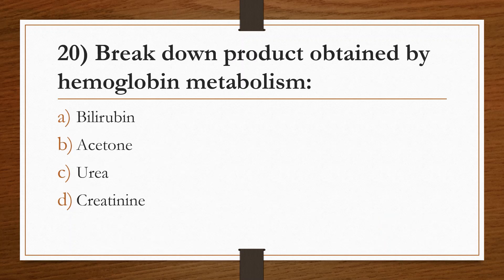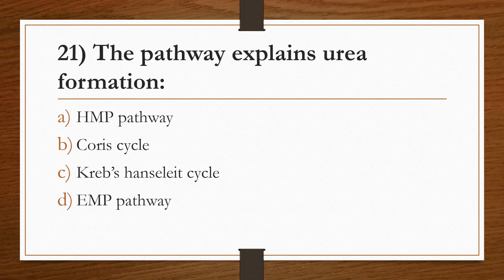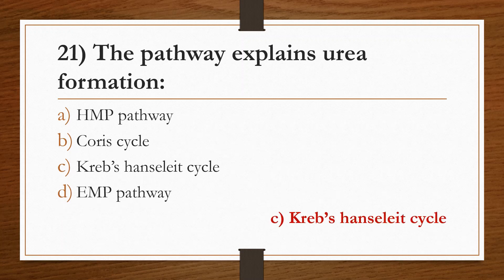Twentieth question: breakdown product obtained by hemoglobin metabolism. Option A: bilirubin. Option B: acetone. Option C: urea. Option D: creatinine. Answer is Option A, bilirubin. Next question: the pathway that explains urea formation. Option A: HMP pathway. Option B: Cori cycle. Option C: Krebs-Henseleit cycle. Option D: EMP pathway. Answer is Option C, Krebs-Henseleit cycle.